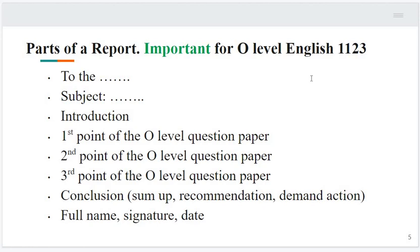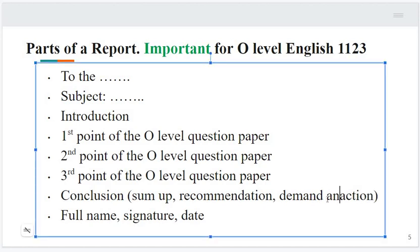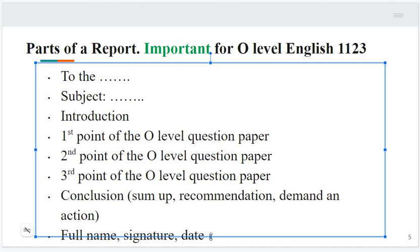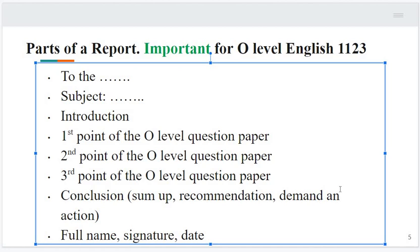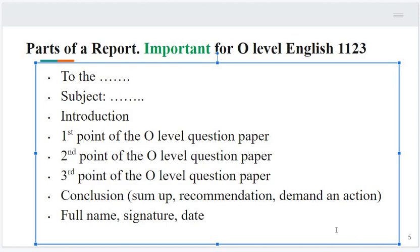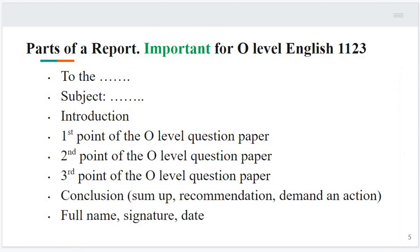Parts of a report — students should memorize this. This is very important. Write: To, Subject, Introduction (one small paragraph), then the first point of the O-level question paper, the second point, and the third point. You must address these three points. Then Conclusion — sum up and recommendation or demand and action. Sometimes the report demands an action from higher officials, such as registering an FIR against culprits. Different actions are recommended according to different situations. Then full name, signature, and date — as you are familiar with different JIT reports, they also present their reports in this format.